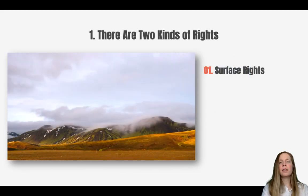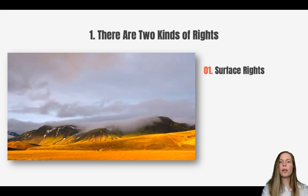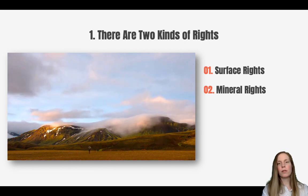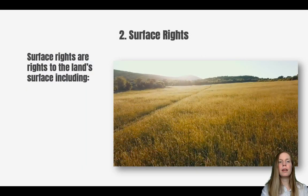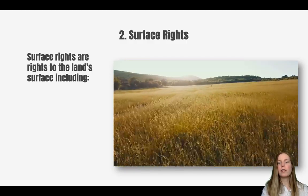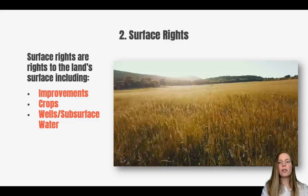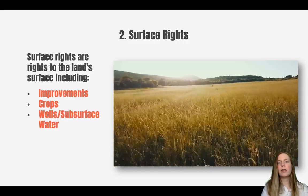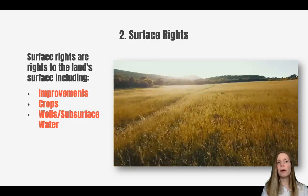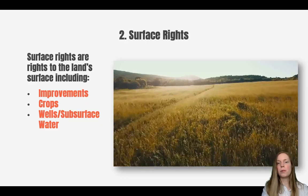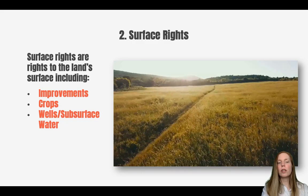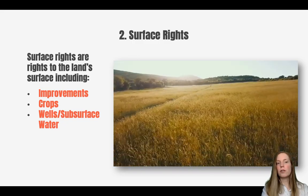Broadly speaking there are two kinds of rights we're talking about here: surface rights to the property and mineral rights. Surface rights are, as the name would suggest, rights to the land surface, and this can include just about everything you would need for most normal uses of the property — improvements like homes, buildings, any kind of structure, crops, and it also generally includes rights to subsurface water.